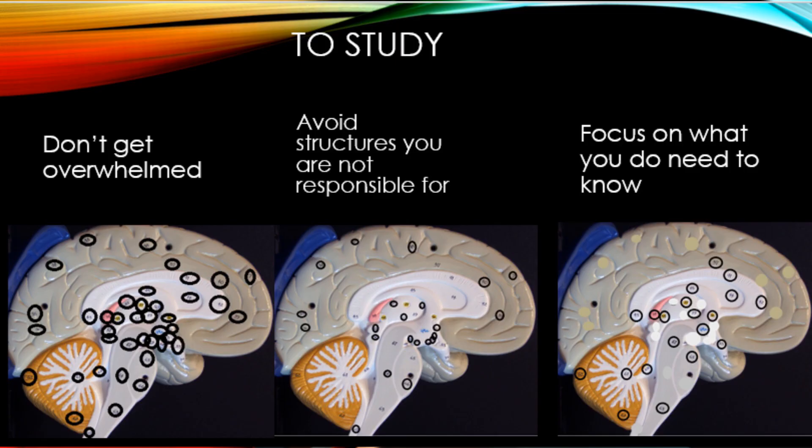The first thing is to not become overwhelmed. Break down the information and look at the structures you are responsible for. On the left-hand side of your screen, you will see that all the structures have been identified. However, you are only responsible for the ones on the right-hand side of your screen. The ones in the middle I have marked, identifying those that you are not responsible for. Make sure you focus on the ones you are responsible for that you need to know.